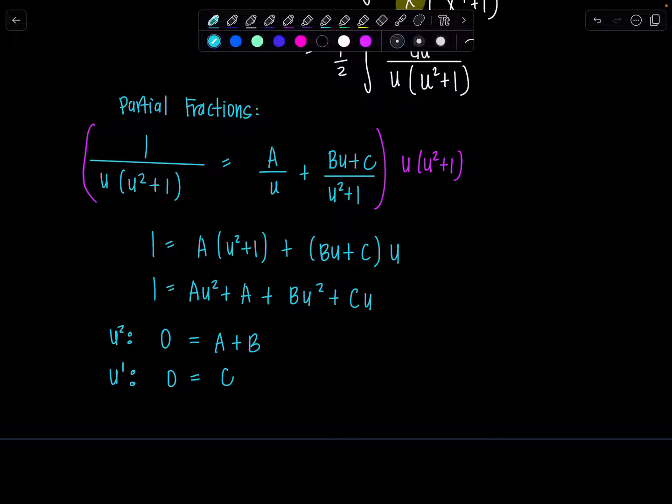And then any constants on the left? Yes. We have 1. Any constants on the right? Yes. Just A. That's a constant. So A is 1. C is 0. And then from here I can see, okay, if A is 1, then B has to be negative 1.